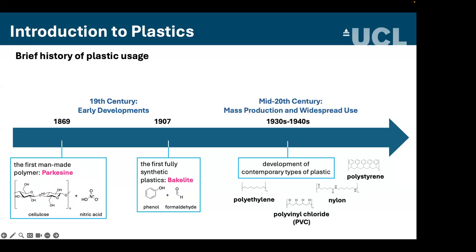In the 1930s and 40s there was huge development of contemporary plastics such as nylon, polystyrene, and polyethylene. The versatility and durability of these plastics led to their widespread use in packaging, construction, and the automotive industry. Demand for plastic materials increased significantly during the Second World War, leading to innovations and an increase in production capacity.